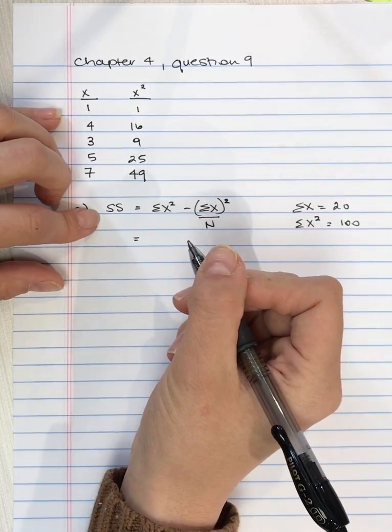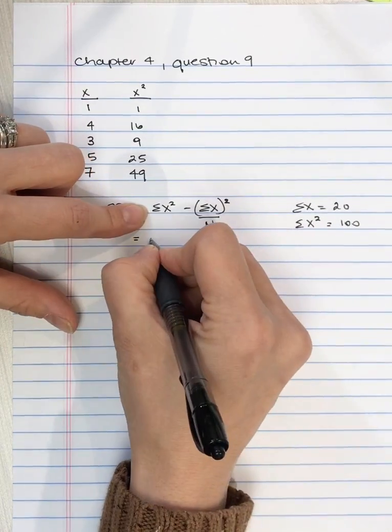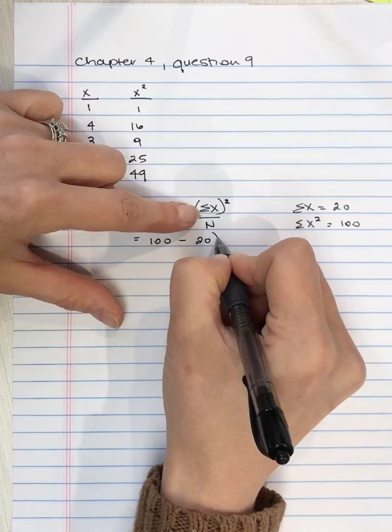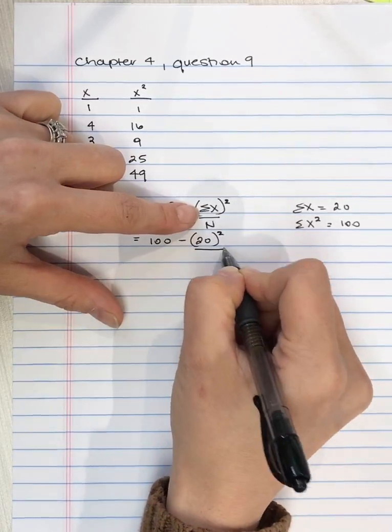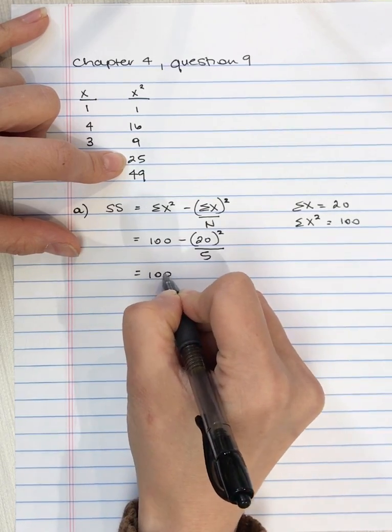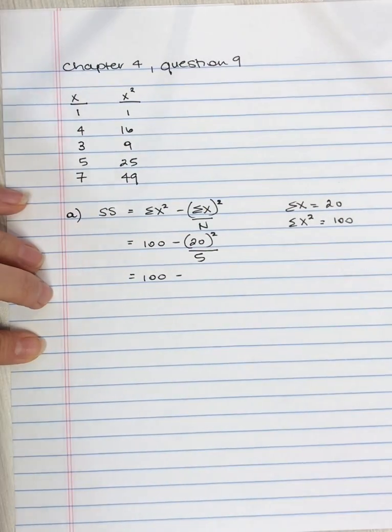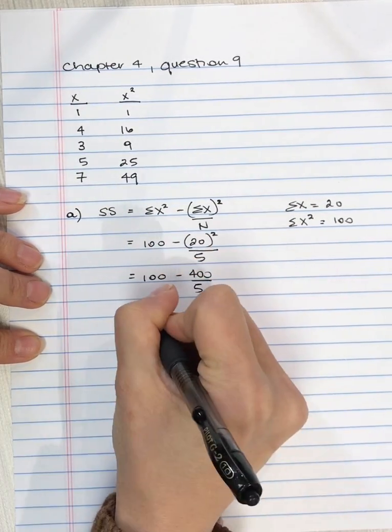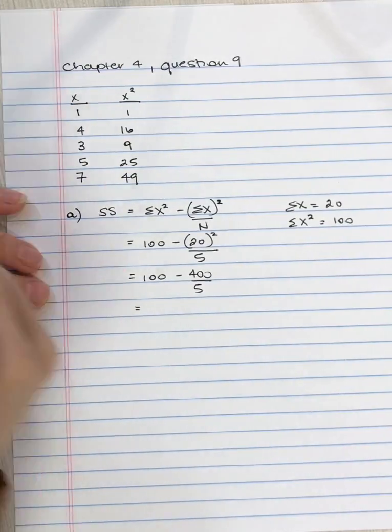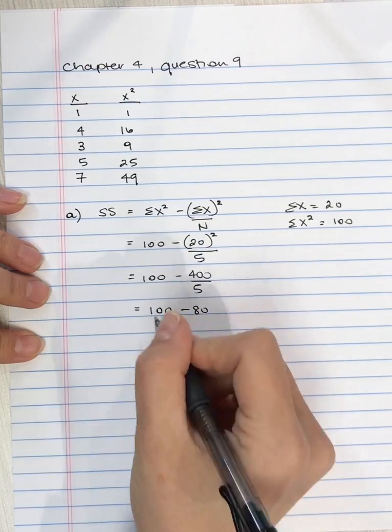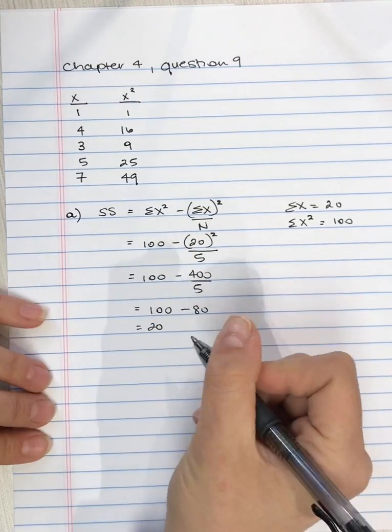So then what we do is we take the sum of squares, we'll take the sum of x squared, 100, subtract the sum of x, which is 20, squared, divided by the number of scores, which is 5. So we have 100, 20 squared is 400, divided by 5. So that's 100, subtract 80, so the sum of squares is 20.